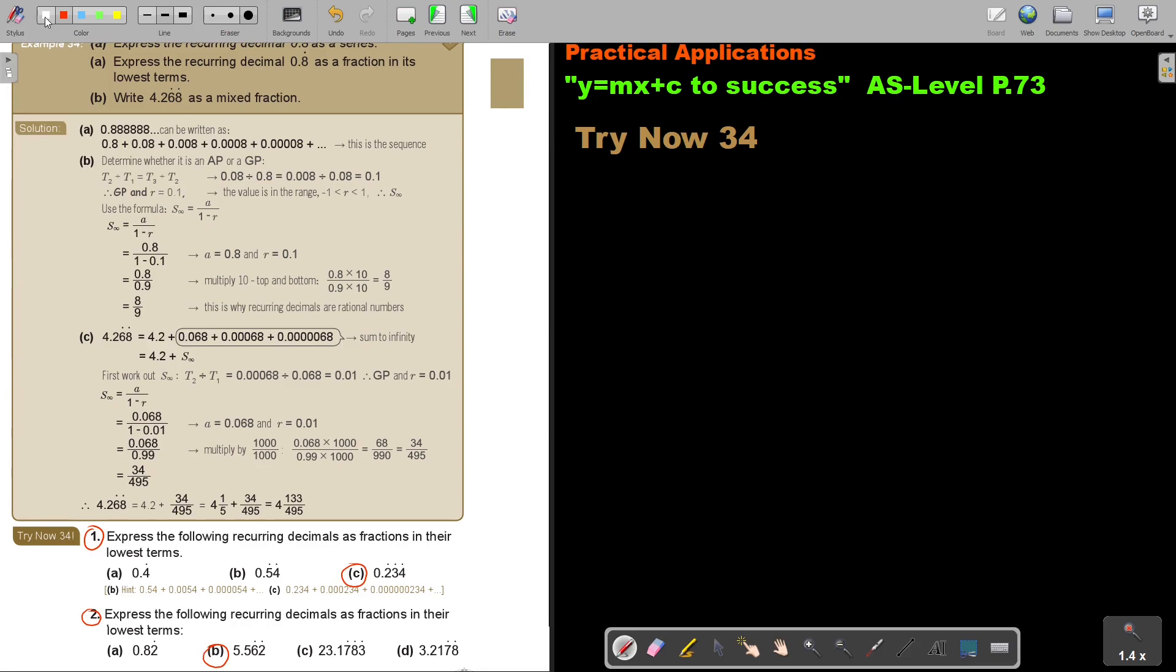Number 1C. Now I start first with the sequence. This is 1C. So it's 0.234 recurring and I make my three dots. So it's actually meaning 0.234 and then I repeat 234 and I repeat 234 and it's going on. So if I'm going to write this I must now first find... Let's first write it as a sequence.